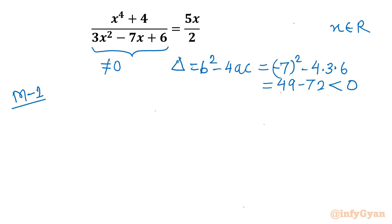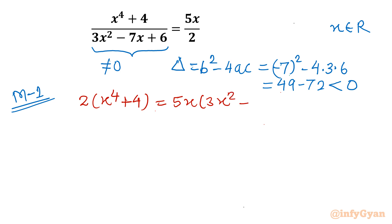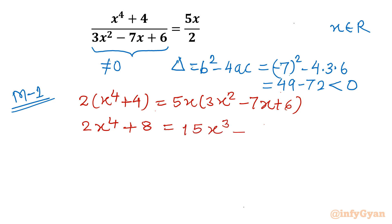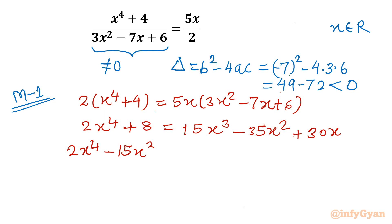Method number 1: Cross multiply, as the denominator is non-zero. So once we do cross multiplication, we will get one equation. It becomes 2 times x power 4 plus 4 equal to 5x times 3x square minus 7x plus 6. Multiplying out: 2x power 4 plus 8 equal to 15x cube minus 35x square plus 30x. Now writing all the terms on the left hand side: 2x power 4 minus 15x cube plus 35x square minus 30x plus 8 equal to 0.